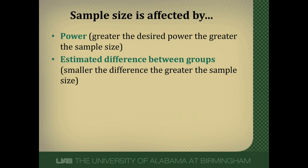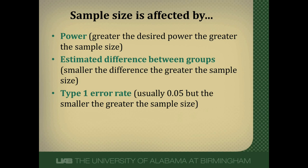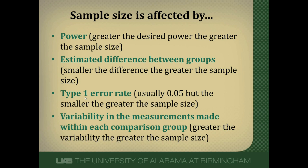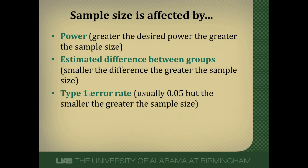Less power leads to fewer patients. You also have to estimate the difference between the intervention arms — sometimes based on previous research, sometimes you just guess. The smaller the difference you anticipate, the greater the sample size, because it's very hard to find small differences; if you expect big differences, it's much easier to find them. The third determinant is the type 1 error rate, usually set at 0.05 — if set at 0.01, you need a greater sample size. Depending on your outcome, the variability anticipated in each comparison group also matters: the greater the variability, the greater the sample size needed.